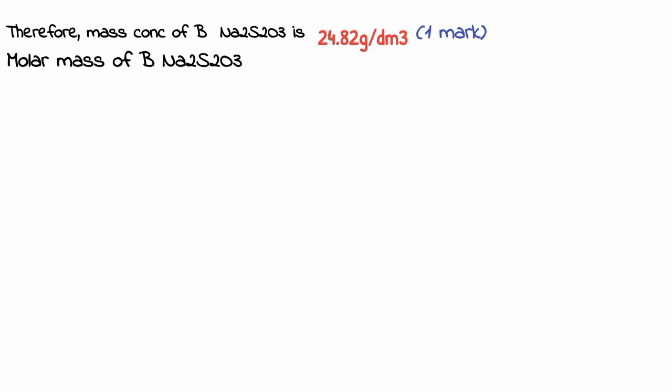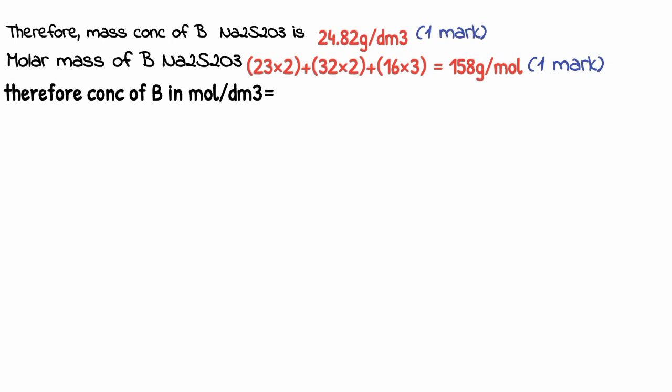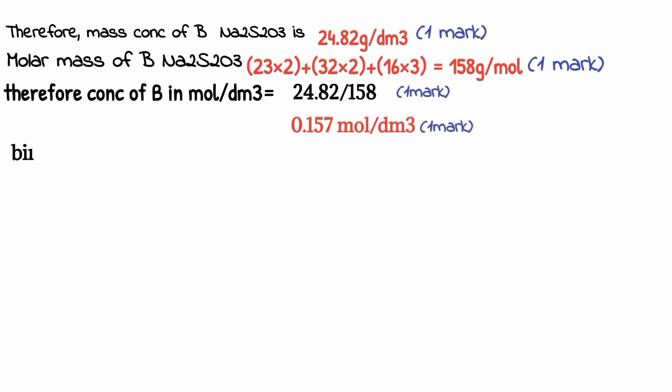Note: correct units are very important. If you use the wrong unit — for example g per mol instead of g per dm³ — you will not score that mark. The molar mass of sodium thiosulfate (Na₂S₂O₃) is calculated from the atomic masses and equals 158 g per mol. Therefore, the concentration of B = mass concentration ÷ molar mass = 24.82 ÷ 158 = 0.157 mol per dm³. Correct units are essential to earn the mark.